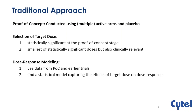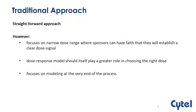Traditionally, proof of concept is conducted using multiple active arms and placebo. To select the target dose, you select the dose level that is statistically significant at the proof of concept stage and is also the smallest of these statistically significant doses that is clinically relevant. The dose-response modeling part happens at a later stage. This straightforward approach has some drawbacks — it tends to concentrate the range of doses studied to a narrow range, typically where sponsors have faith they will detect a dose signal. The dose-response model should play a greater role in choosing the right dose and should actually happen at the design stage.